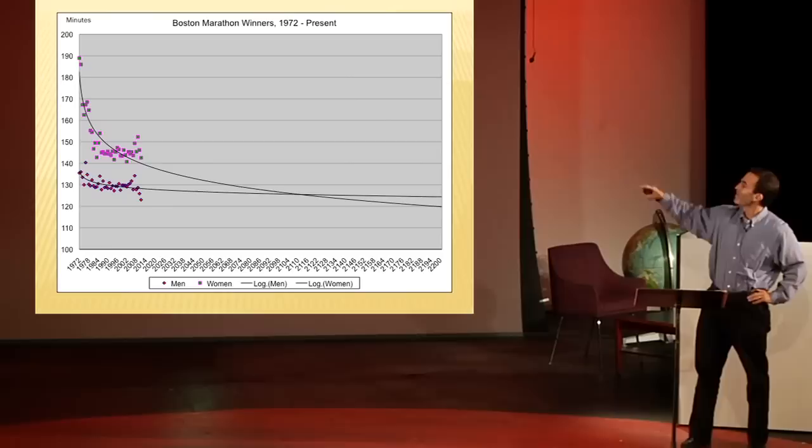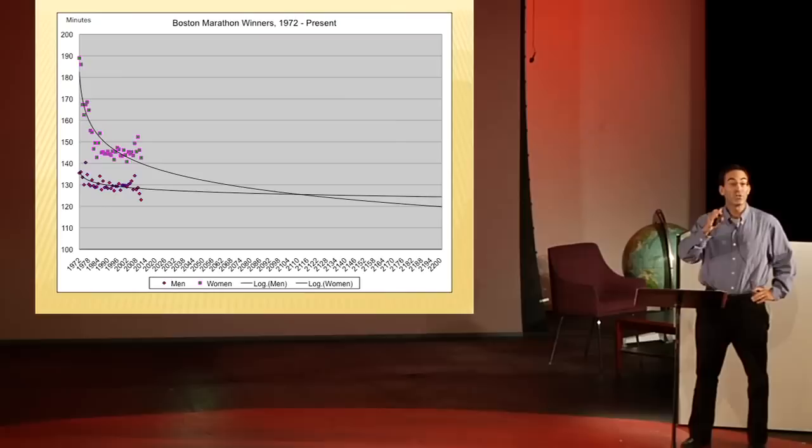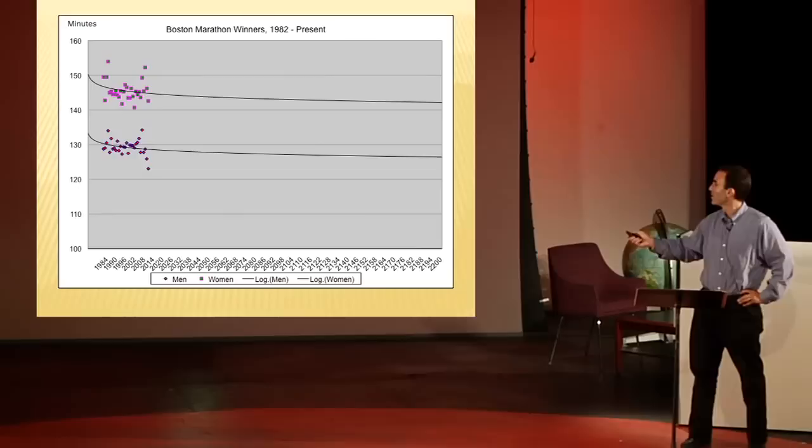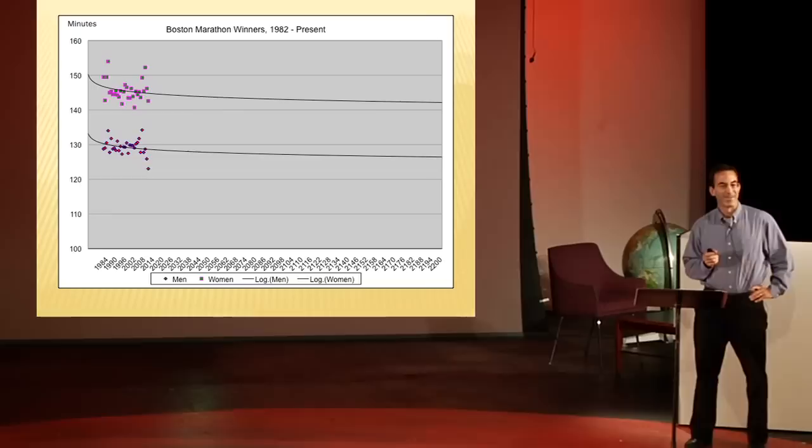Some of you are still not happy with that answer. So you say, look at those times up at the start. The women's times were so slow from 1972 to 1982. They shouldn't count. They skew the regression. Okay. We'll take those out. We'll look from 1982 to the present. Ah, there we go. That was the answer we were waiting for. The fastest woman will never beat the fastest man in the Boston Marathon.